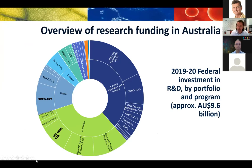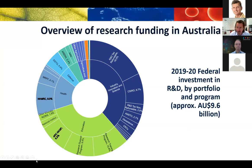Australian government investment in R&D last year was $9.6 billion across a variety of portfolios. It's quite a unique funding system here where the delivery of R&D funds is diverse through portfolios including industry, education, health, defence, and other agencies such as environment and agriculture. Of that $9.6 billion, about $800 million comes from the ARC and an equivalent amount through NHMRC. Part of the requirements for receiving that funding is explicit adherence to the code and its supporting documentation.